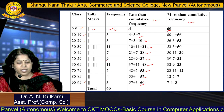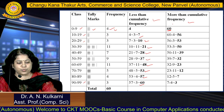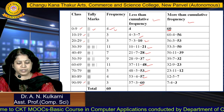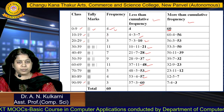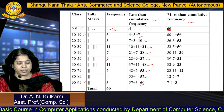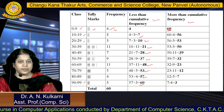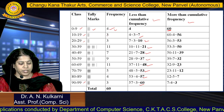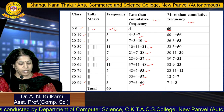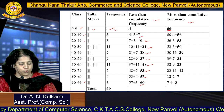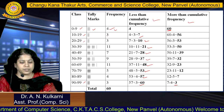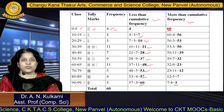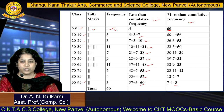For more than cumulative frequency, subtract from highest to lowest. Starting with 60: 60−4=56, 56−3=53, 53−3=50, 50−11=39, 39−7=32, 32−9=23, 23−11=12, 12−5=7, and 7−4=3. This is the more than cumulative frequency. In this way we can calculate both less than and more than cumulative frequency.